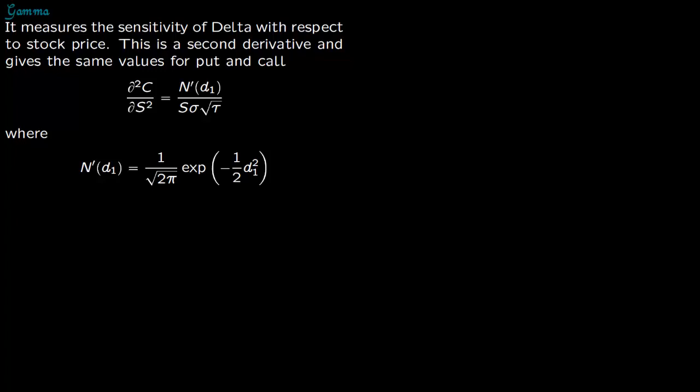We now talk about gamma. Gamma measures the sensitivity of Delta. Delta is the Greek which we discussed in the previous lecture with respect to stock price.